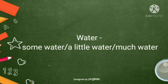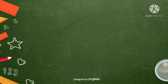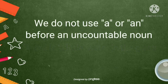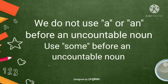Water, some water, a little water, much water. There is some water in the jug. There is a little water in the glass. You do not use a or an before an uncountable noun.